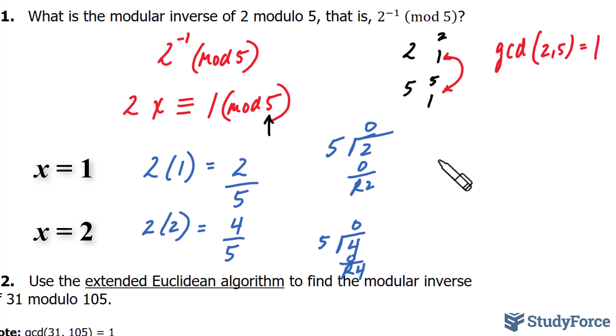Let's try x equaling to 3. 2 times 3 is 6, divided by 5. Using long division, 5 fits into 6 once. 1 times 5 is 5. 6 take away 5, gives us a remainder of 1. This means that the modular inverse of the following is equal to 3.